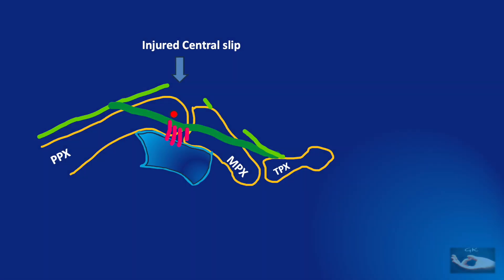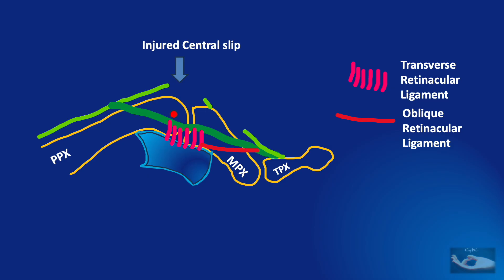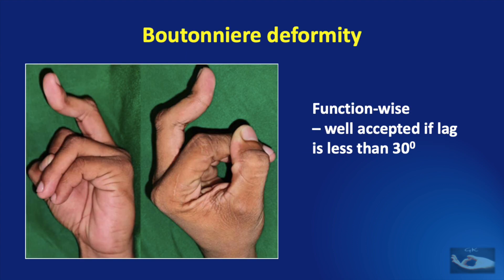These lateral slips are held in position by the fibrosed transverse retinacular ligament, which attaches the lateral slips to the fibrous flexor sheath. Also, the oblique retinacular ligament gets contracted, adding to the hyperextension at the distal interphalangeal joint. The extensor hood is kept in the same position for quite some time, and as a result, the extensor expansion gets stuck to the underlying proximal phalanx bone.